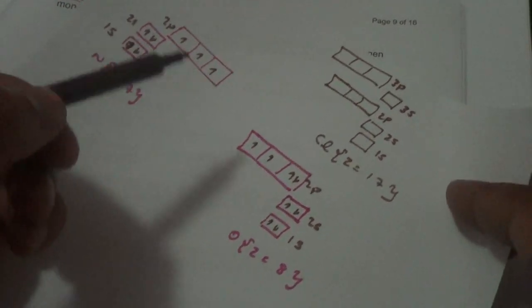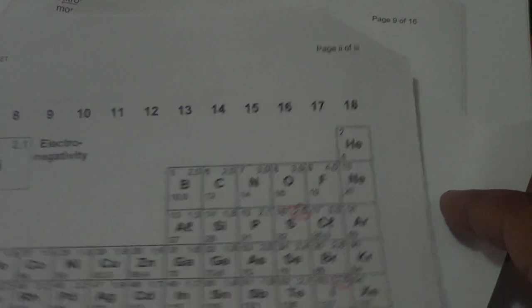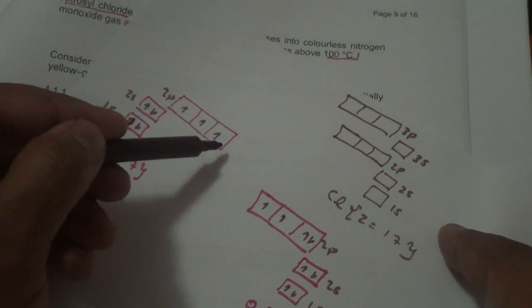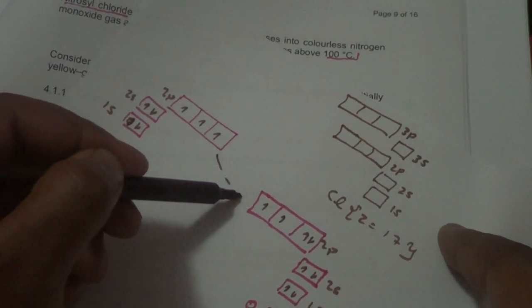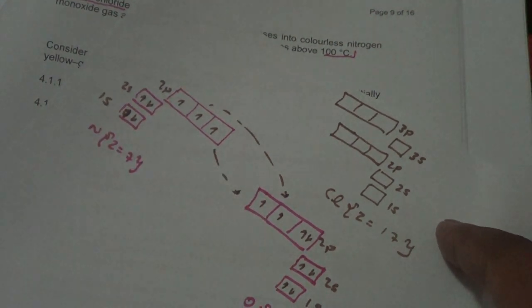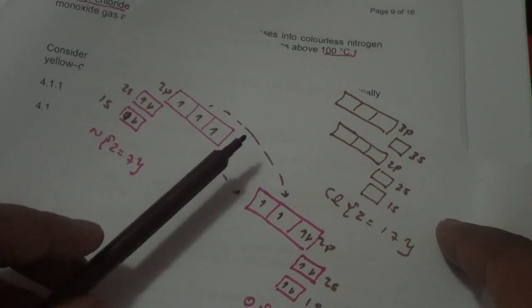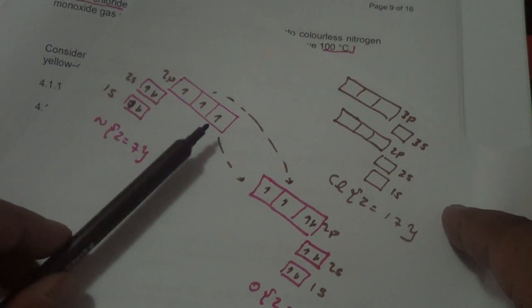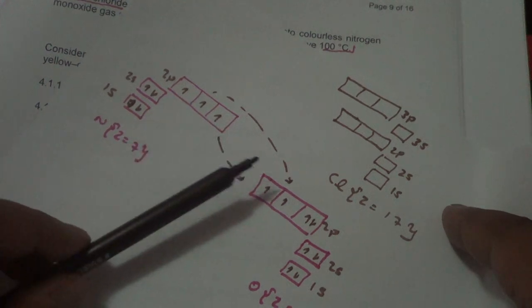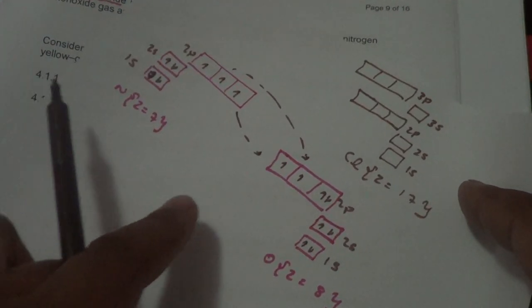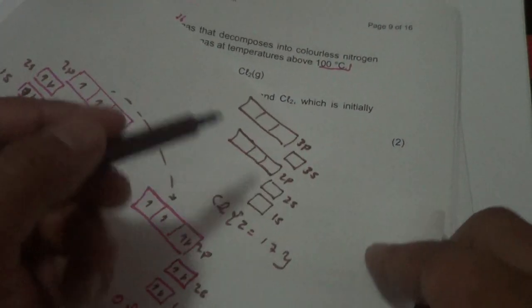Oxygen has an electronegativity of 3.5, so it's much stronger than that of nitrogen. What can happen is these electrons can share these orbitals — they can share somewhere in between. There cannot be a complete transfer, because the electronegativity is quite significant for each. Now, what about chlorine? It's element number 17, element of group 7.